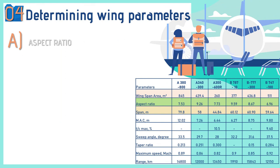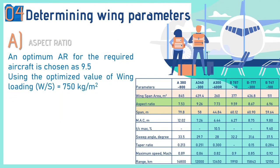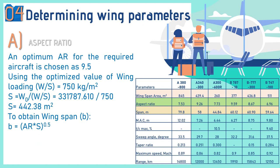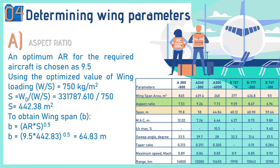Using the optimized wing loading of 750 kg/m², the wing area is calculated as W_T0 divided by wing loading. With W_T0 = 331787.610 kg and wing loading = 750 kg/m², the wing area becomes 442.38 m². To obtain the wingspan, using the chosen aspect ratio of 9.5: b = √(AR × S) = √(9.5 × 442.83), giving a wingspan of 64.83 meters.